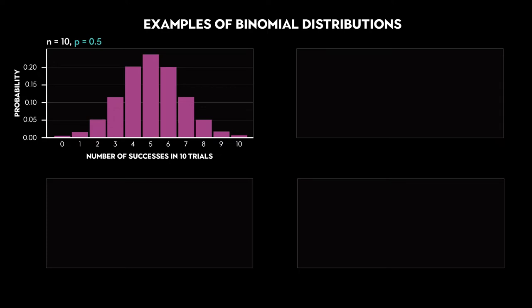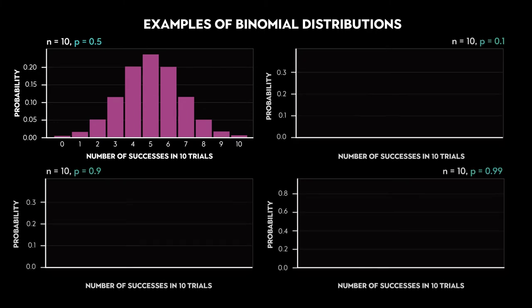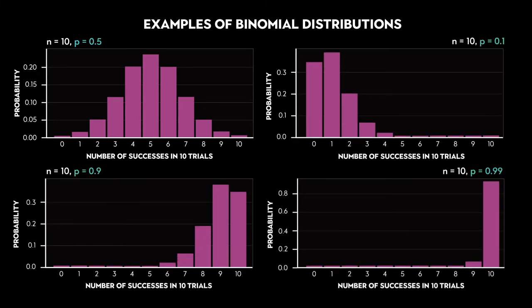That makes sense: if the probability of success is a half and I spin my roulette wheel 10 times, then I should expect five successes, so the most likely value should be five. We can look at different values of p for the same n and get an idea of likely outcomes. If the probability of success is very low, close to 0.1, we expect to see low values of x — more failures than successes. If the probability of success is very high, we expect to see higher values of x, just as shown on screen.